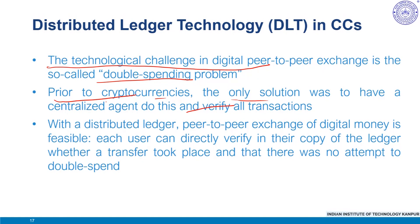Prior to cryptocurrencies, the only solution was to have a centralized agent verify all the transactions. Cryptocurrencies overcame this double spending problem via decentralized record keeping through what is known as a distributed ledger — think of it as an Excel file that starts with an initial distribution of cryptocurrencies and records the history of all subsequent transactions. An up-to-date copy of the entire ledger is stored by each user, which is what gives it its distributed character. There are two broad classes of how the ledger is updated: permissioned and permissionless.